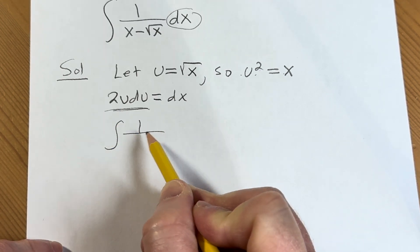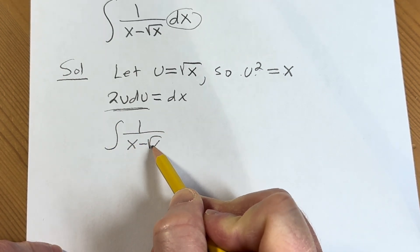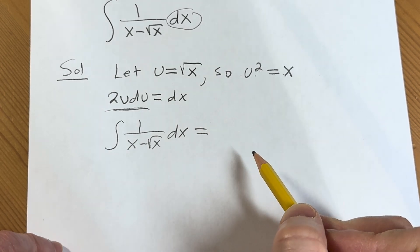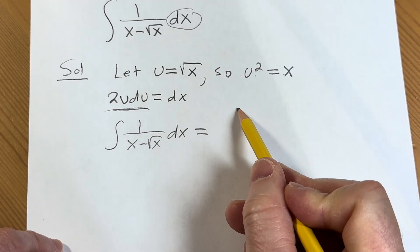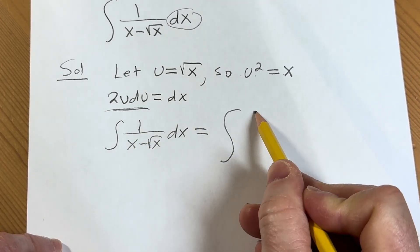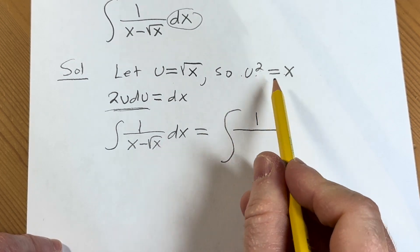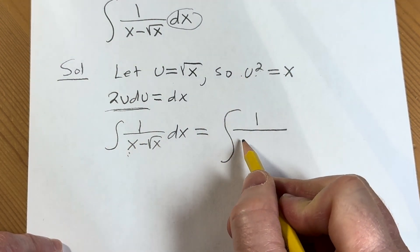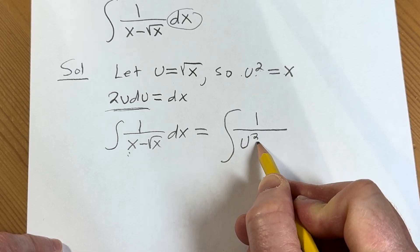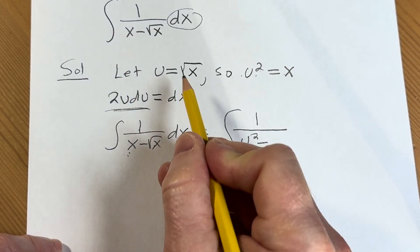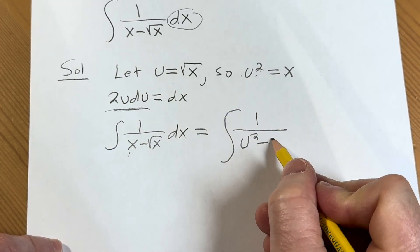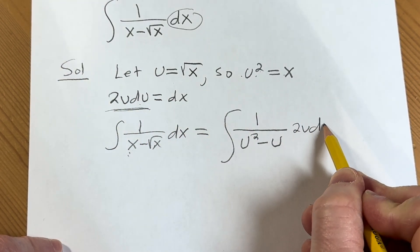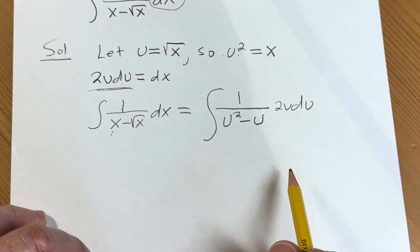So our integral becomes: 1 over x minus the square root of x, dx is equal to the integral of 1 over — x is u squared, so that's u squared — minus the square root of x, which is equal to u, and then dx is simply 2u du.